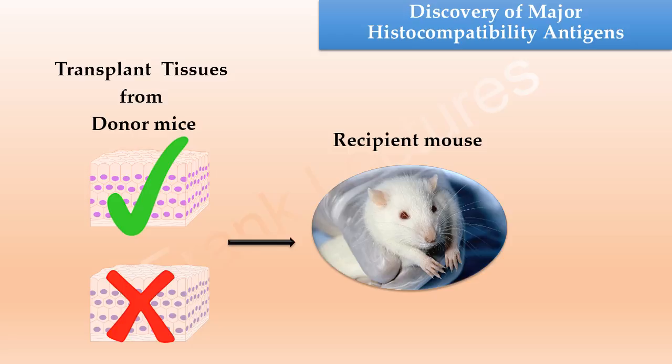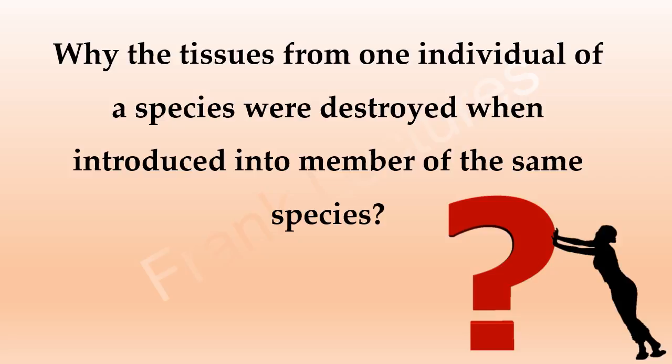The question was: why were the tissues from one individual of a species destroyed when introduced into a member of the same species? The answer was given by an American mouse geneticist, George Snell.